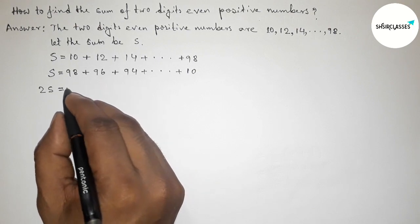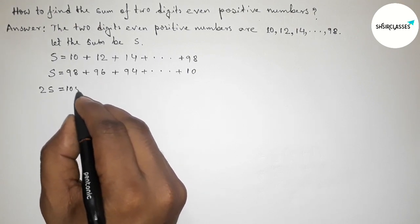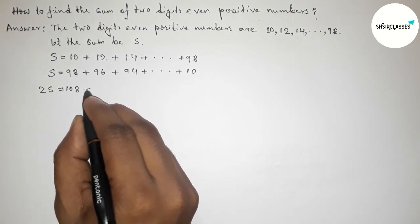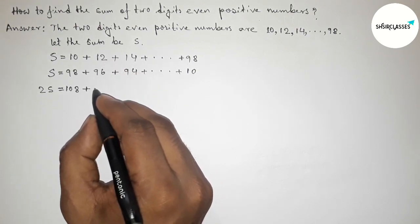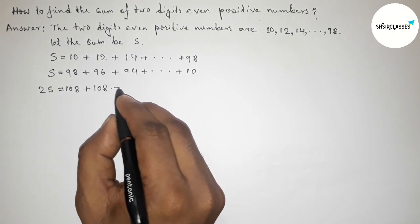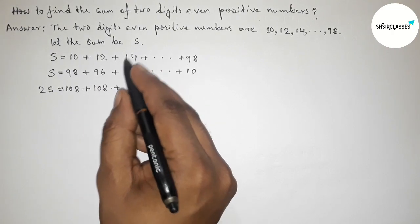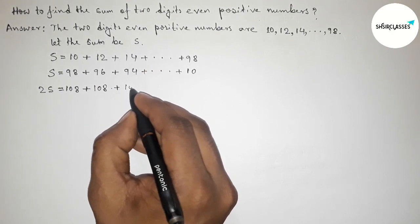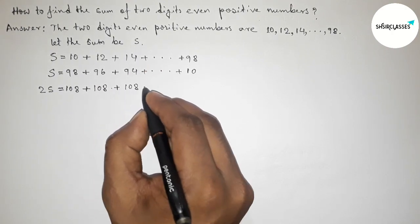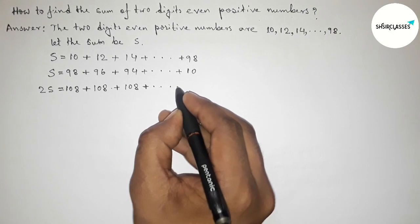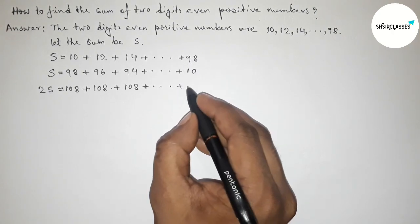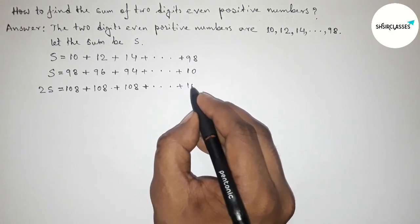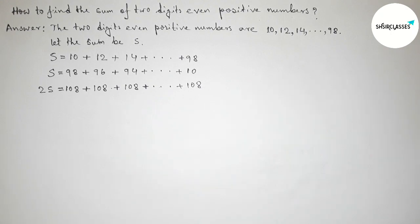When we add the two equations term by term, each pair sums to the same value: 10 plus 98 equals 108, and similarly every corresponding pair also equals 108, all the way to 98 plus 10, which is also 108.